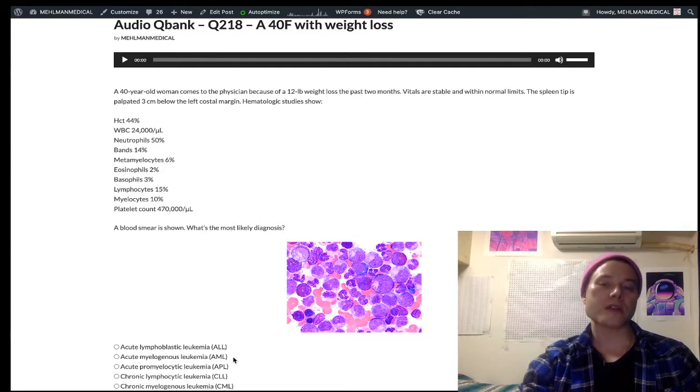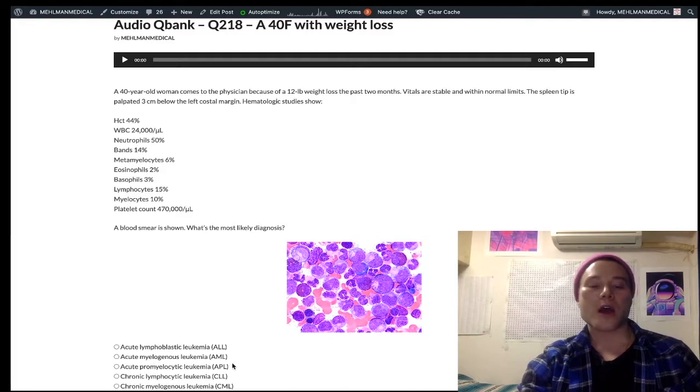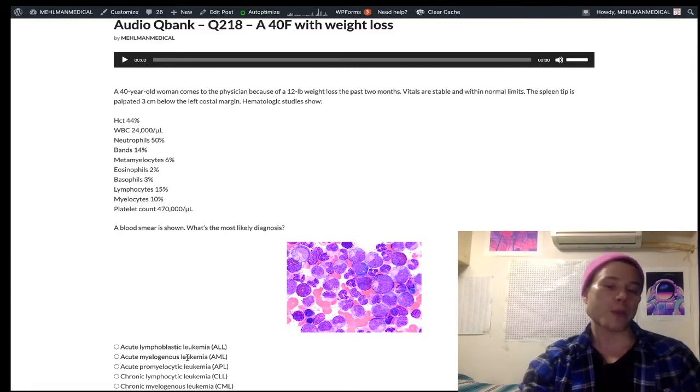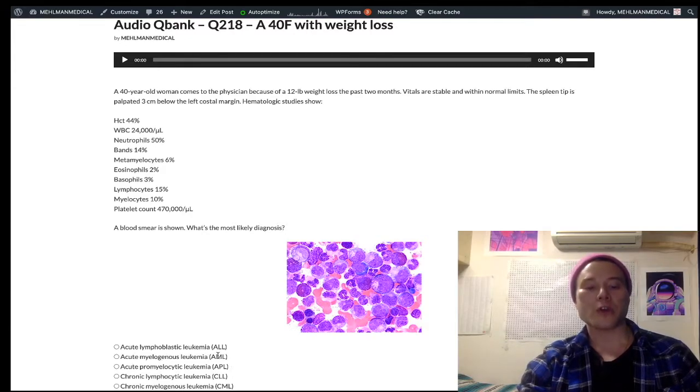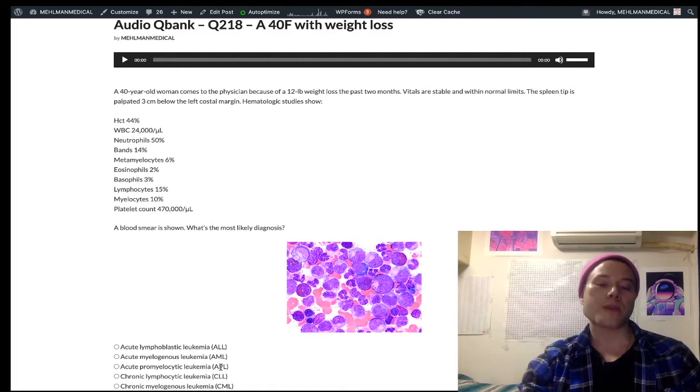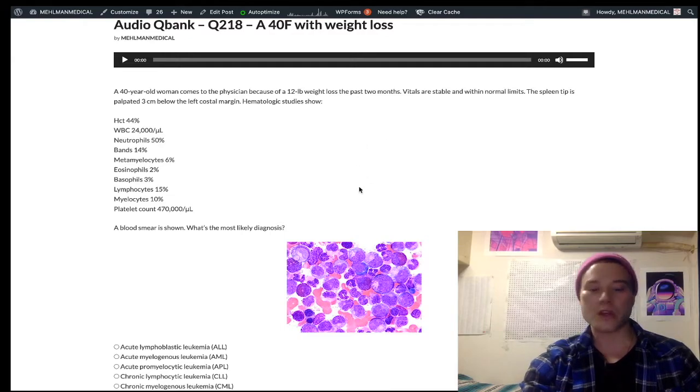AML, once again, that's going to be Auer rods on the smear, and they're going to say that there's blasts. And APL is merely a subtype of AML. So you say, but if you were seeing the answer choices, some students would say, but isn't APL just a type of AML? Well yeah, but they're both wrong, so there you go. So APL is AML type M3. These are both AML. AML, but AML in general, you just need to be aware of the Auer rods. APL is a subtype that has a 15-17 translocation. It's notably responsive to all-trans-retinoic acid, vitamin A. And when you lyse the leukemic cells, you can get tumor lysis syndrome. They want you to know you get xanthine oxidase inhibitors to prevent tumor lysis syndrome. And the Auer rods being released into the blood can precipitate a DIC, disseminated intravascular coagulation.